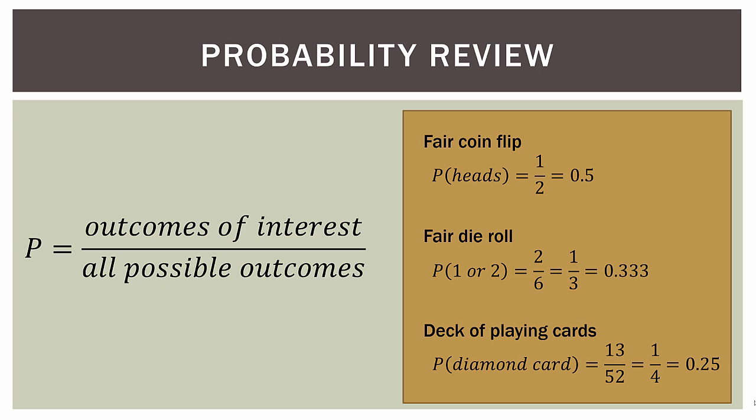How about a deck of playing cards? What's the probability of randomly pulling out a card that's a diamond? There are 13 of each suit — 13 diamonds, 13 hearts, 13 clubs, and 13 spades in a normal deck of cards. The probability of pulling out a diamond is 13 out of 52, which is one fourth or 0.25. That's all you need to understand about probability to grasp the basics of logistic regression.